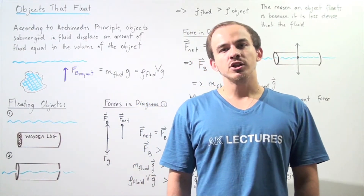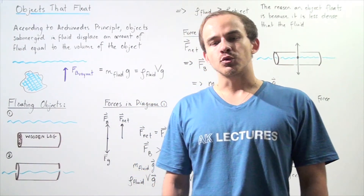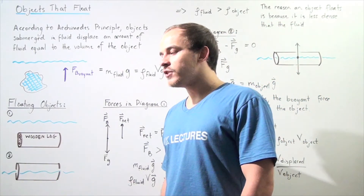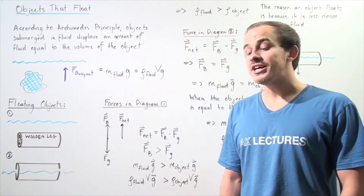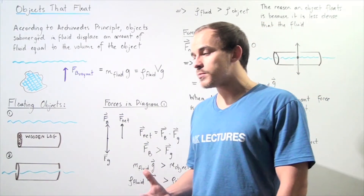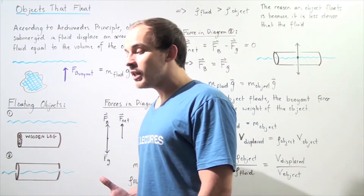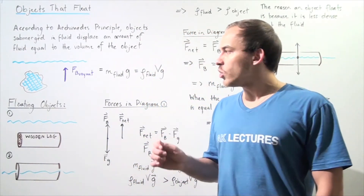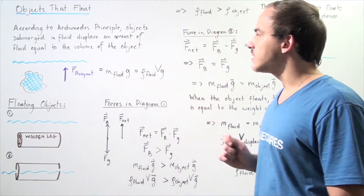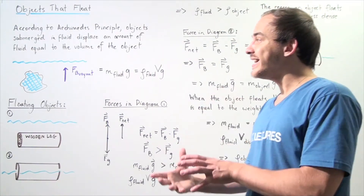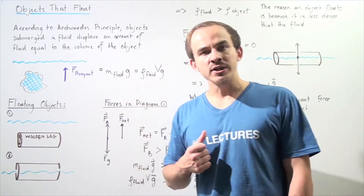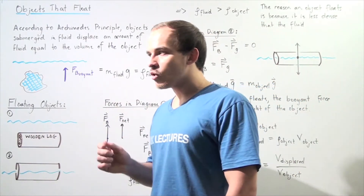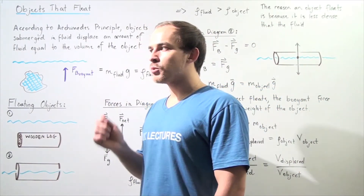In an earlier lecture, we alluded to the fact that there is a relationship between Archimedes' Principle and floating objects. In other words, we can use Archimedes' Principle to describe or explain exactly why objects float. That's exactly what we're going to explore in this lecture — we're going to find the link between Archimedes' Principle and floating objects. Let's begin by recalling what Archimedes' Principle is.